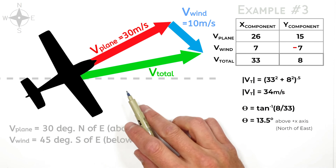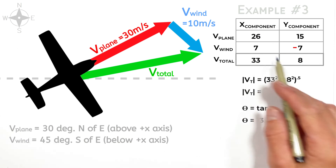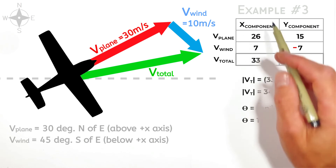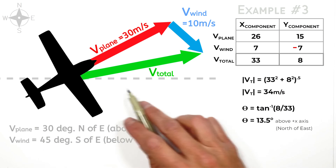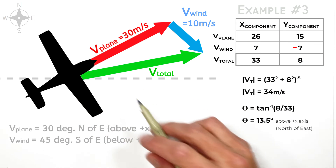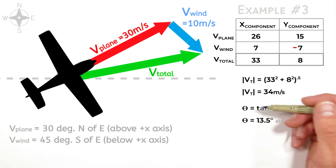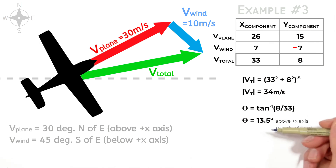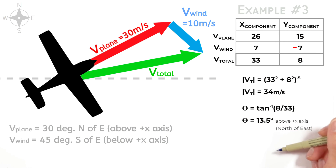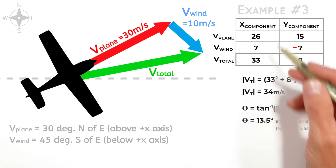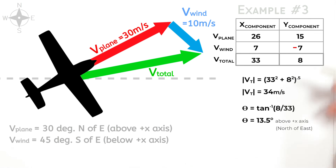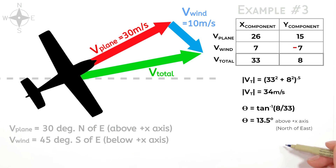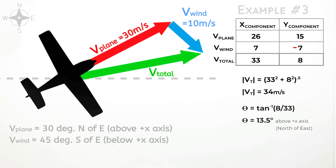The fact of the matter is you can use this method of setting up a table to add any vectors — whether they're velocity vectors, displacement vectors, or force vectors. There are lots of vectors that show up in physics, and this method will work for all of them. I hope you found this useful, and that's all for now.